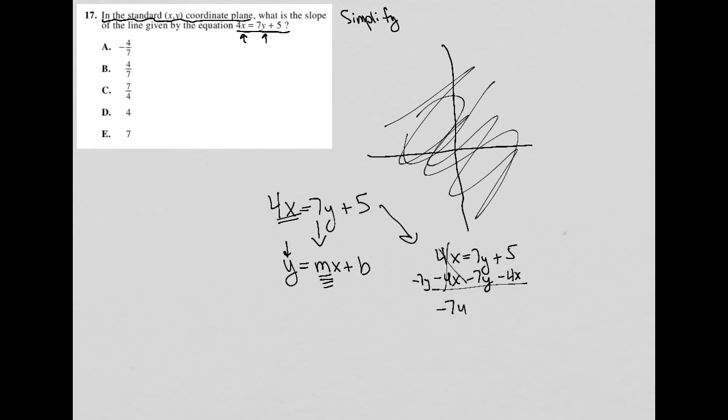is negative 7Y equals negative 4X plus 5. So I'm getting closer to having my Y value on the left side and isolate it.